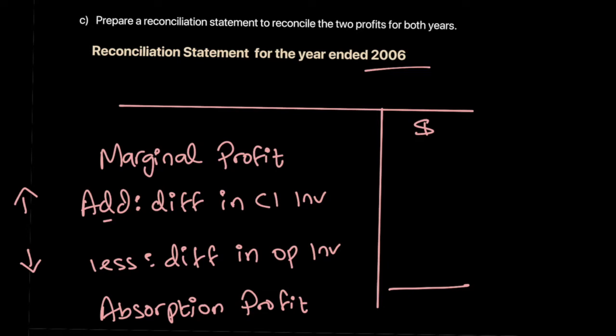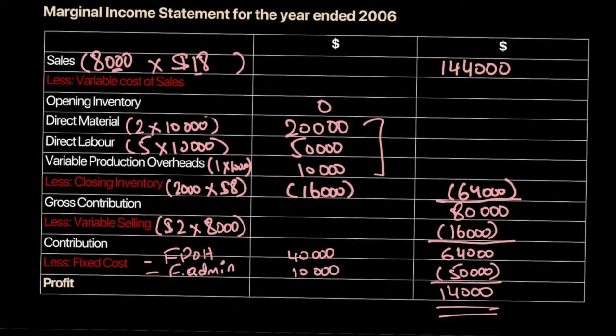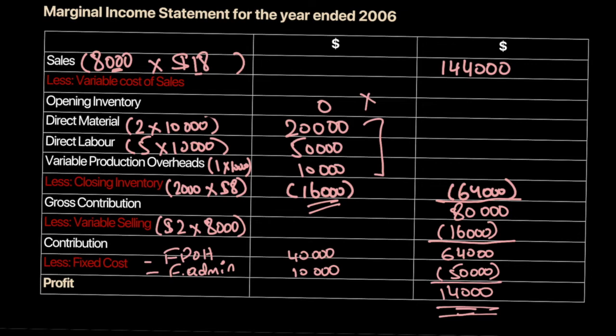Looking at the 2006 marginal income statement: the marginal profit for 2006 was $14,000. There was no opening inventory. The marginal closing inventory was $16,000.